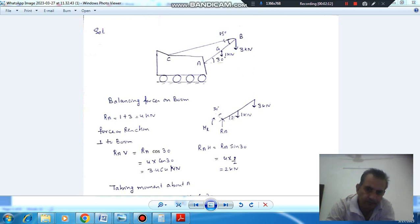So RA perpendicular will be equal to RA cos 30. RA is 4, so 4 cos 30 gives us 3.464 kN. And the component along the boom is 4 sin 30, which is 2 kN.